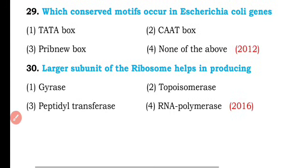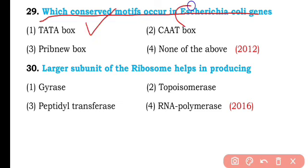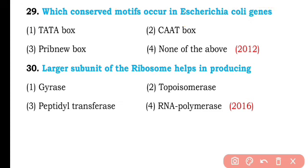Question number twenty-nine. Which conserved motifs occur in Escherichia coli genes? TATA box, CAAT box, Pribnow box, or others? The answer is option one — the TATA box is present in Escherichia coli genes.